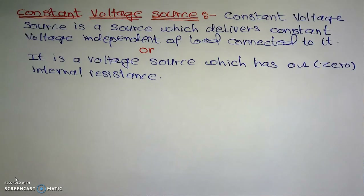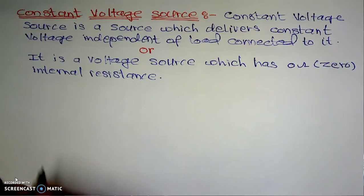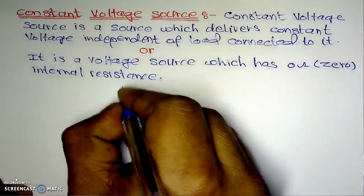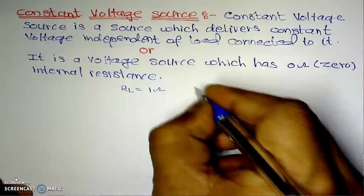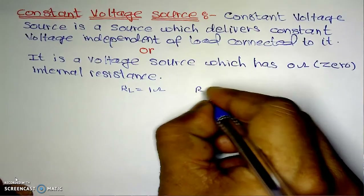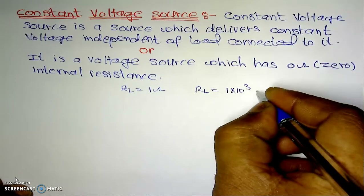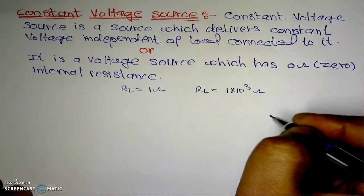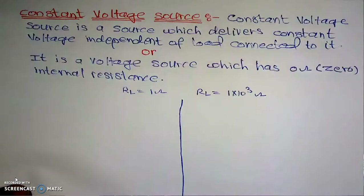I will take two cases to understand which source delivers constant voltage. For explanation, I will consider two load resistances: 1 ohm and 1 kilohm, that is 1×10³ ohm or 1000 ohm. I will clearly differentiate the two cases.